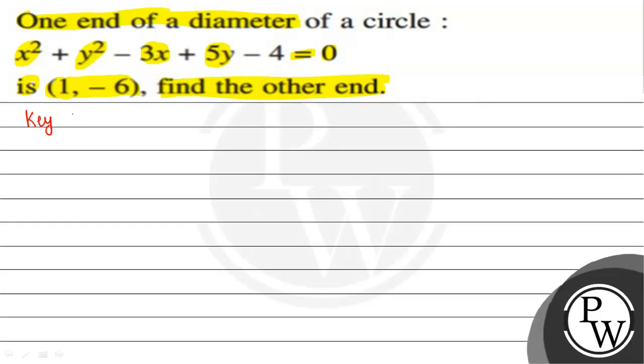The key concept to solve this question is the general form of a circle, given by x² + y² + 2gx + 2fy + c = 0. The center of this circle is at (-g, -f).